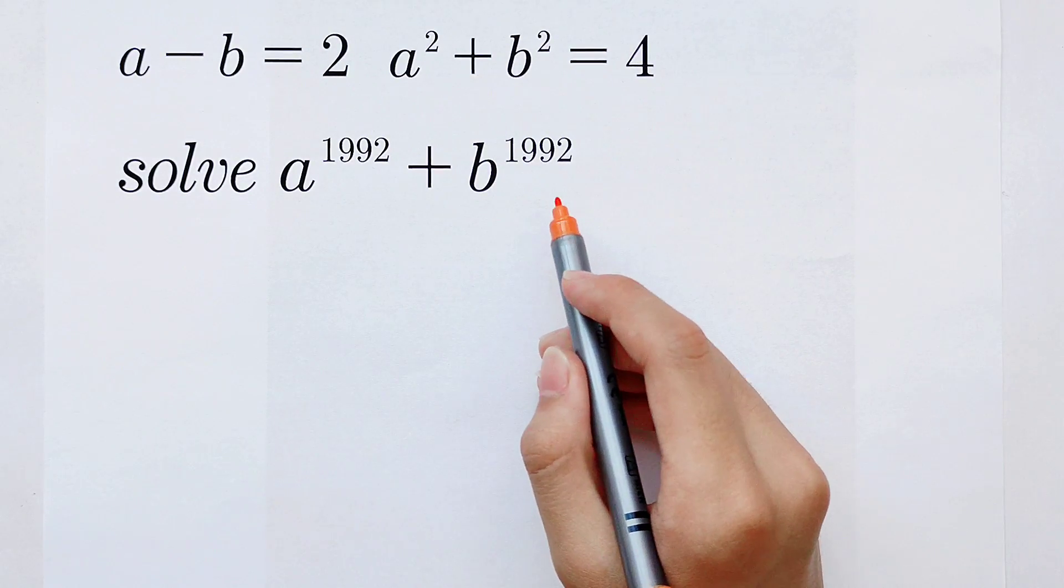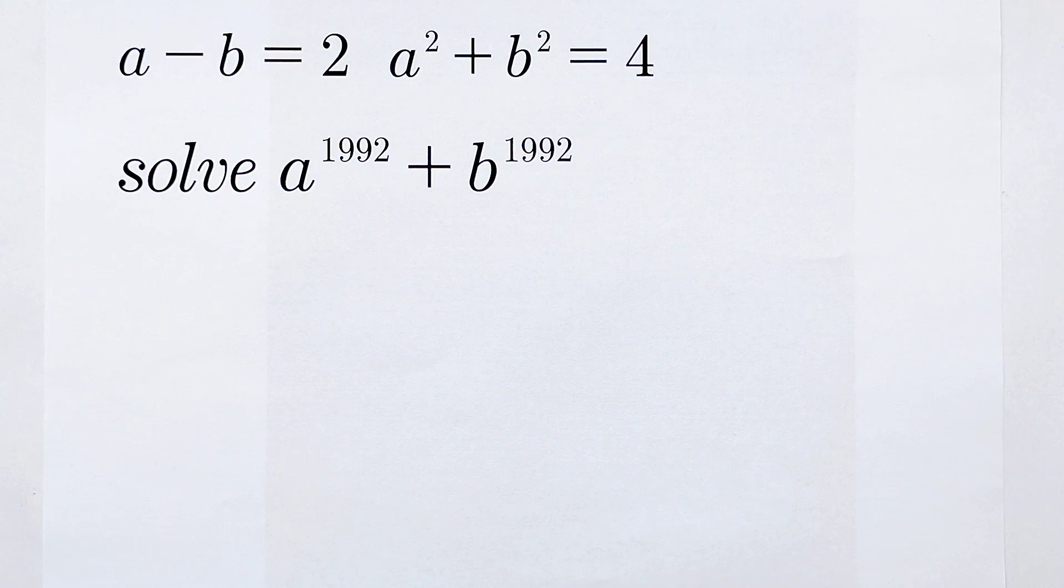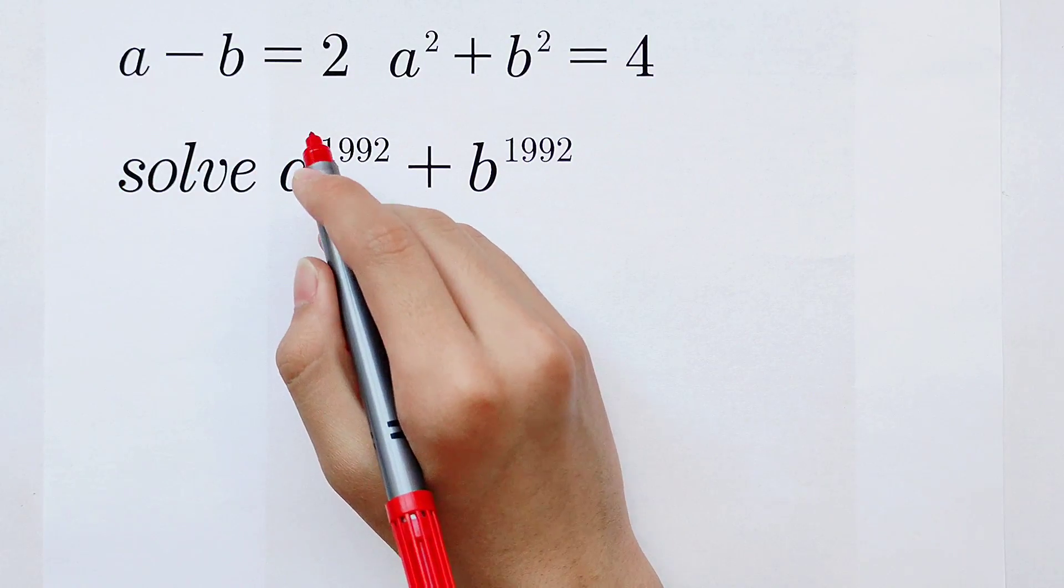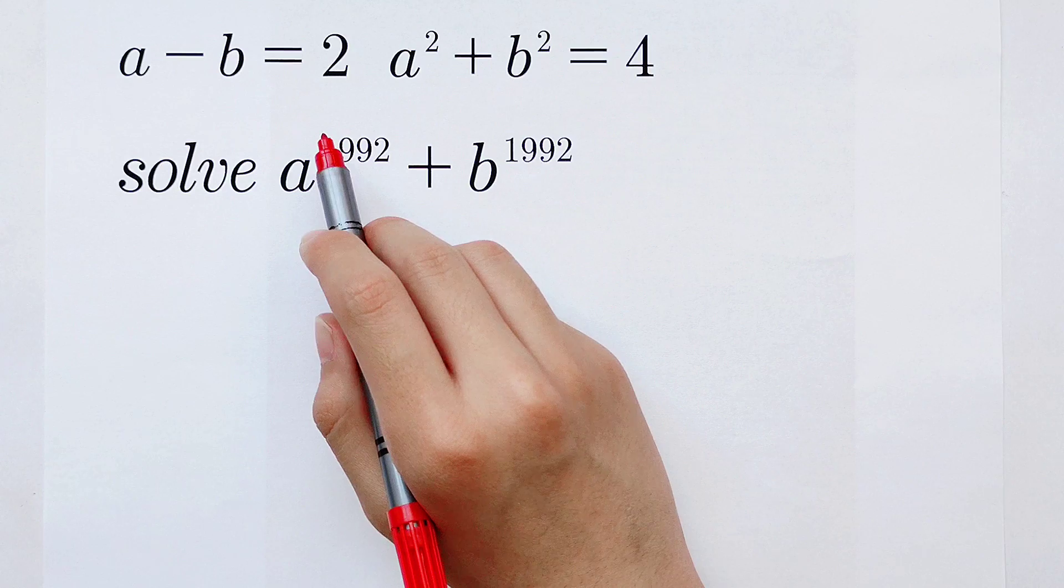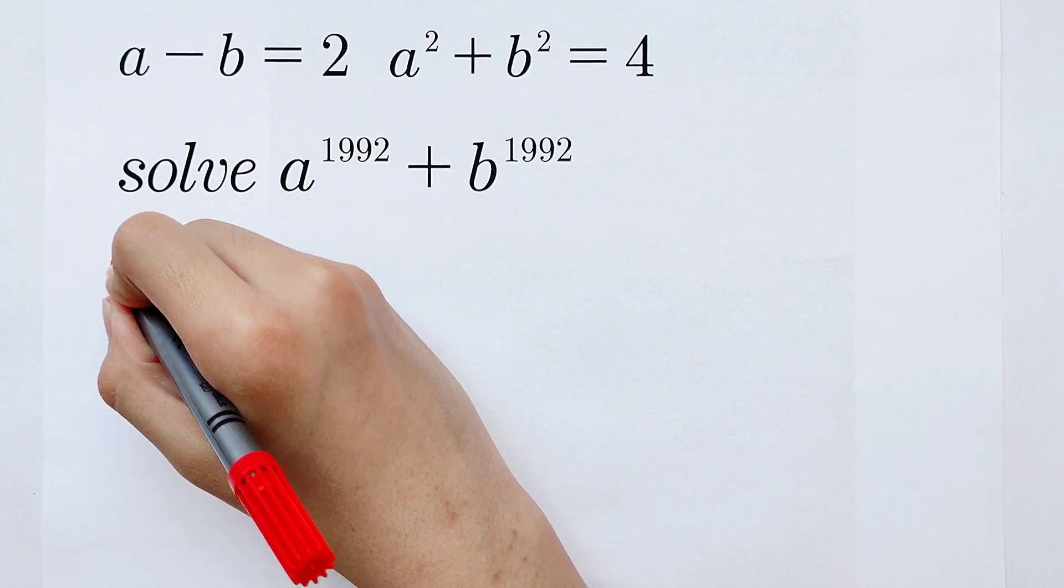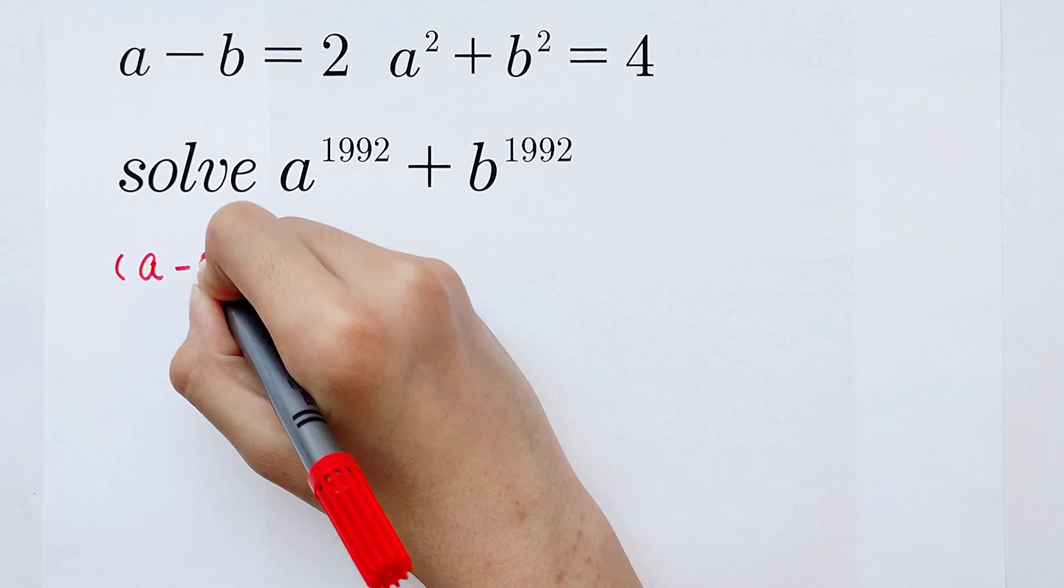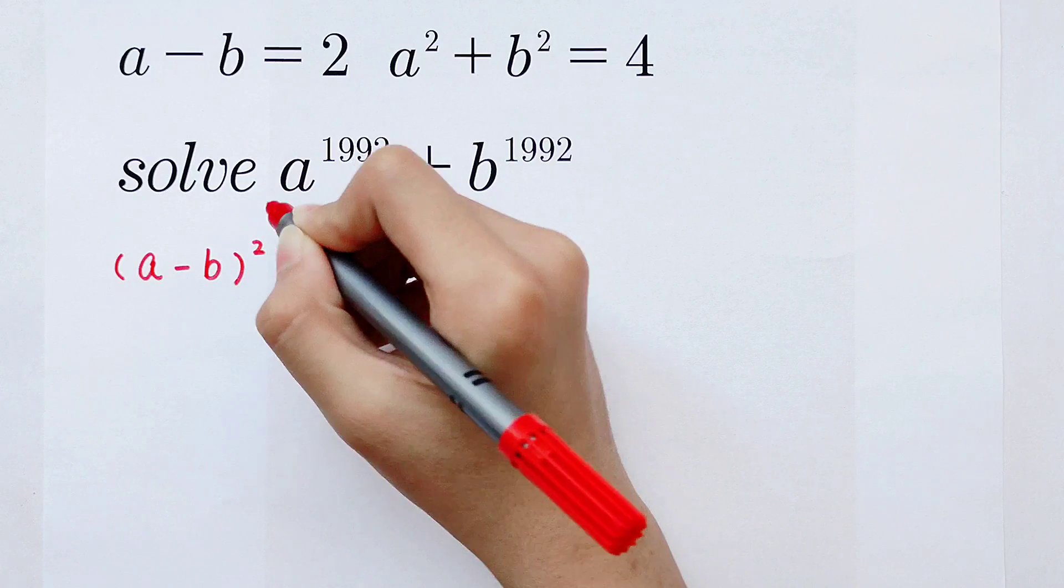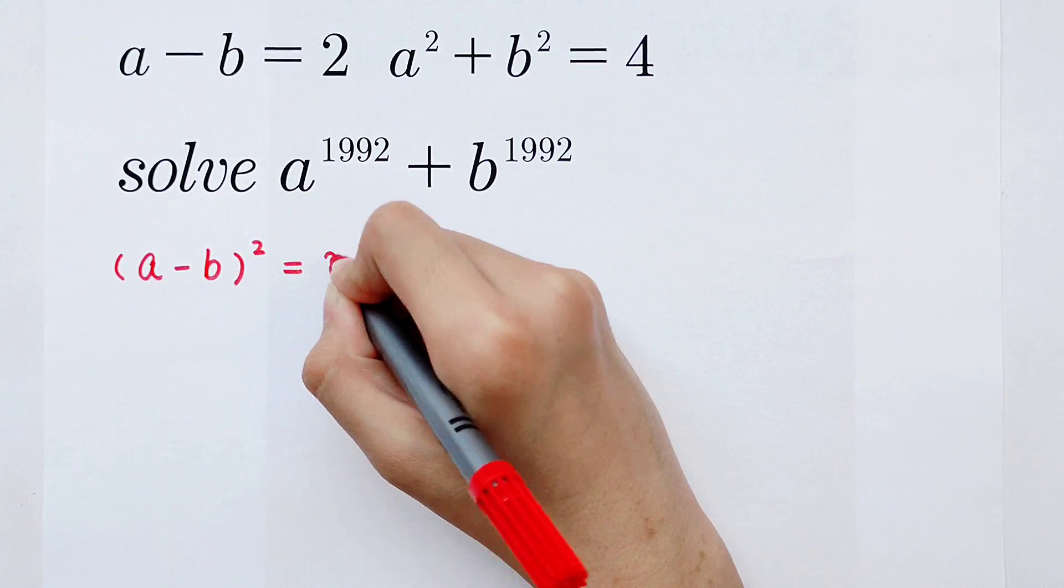The exponents are quite large. How can I do it? Because a minus b is 2, we square both sides. That means (a-b) to the power of 2 is equal to 2 to the power of 2.